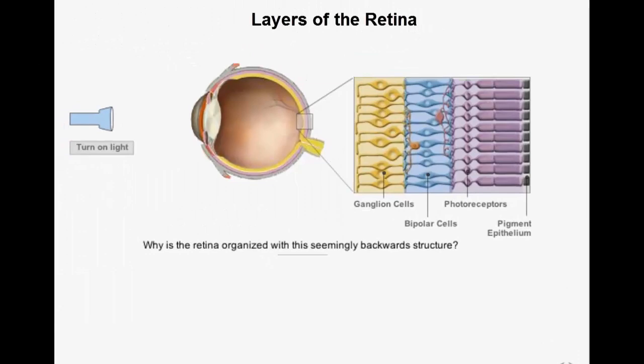The retina is a sheet of cells on the back of the eye that contains the cells necessary to convert light into a neural signal. There are three main layers of the retina: the photoreceptor layer, the bipolar cell layer, and the retinal ganglion cell layer.